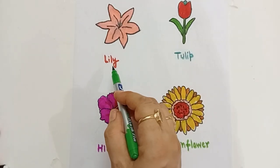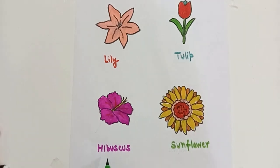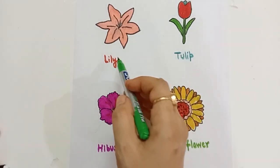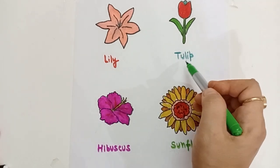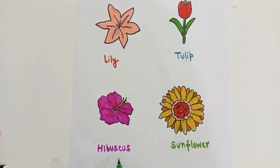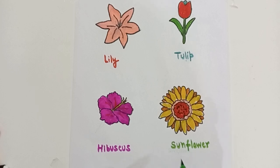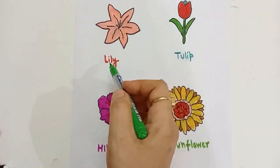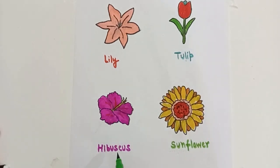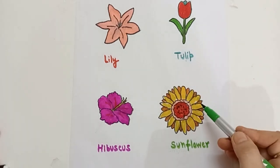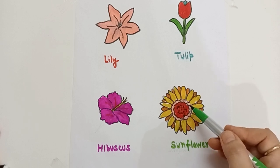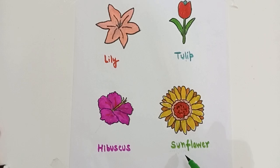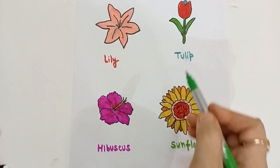Here are: Sunflower, L for Lily, T for Tulip, H for Hibiscus, S for Sunflower. L for Lily — L-I-L-Y. T for Tulip — T-U-L-I-P. H for Hibiscus — H-I-B-U-S-C-U-S. S for Sunflower — S-U-N-F-L-O-W-E-R. Light pink, red, green, pink, yellow, orange, red, black. So: Lily, Tulip, Hibiscus, Sunflower.